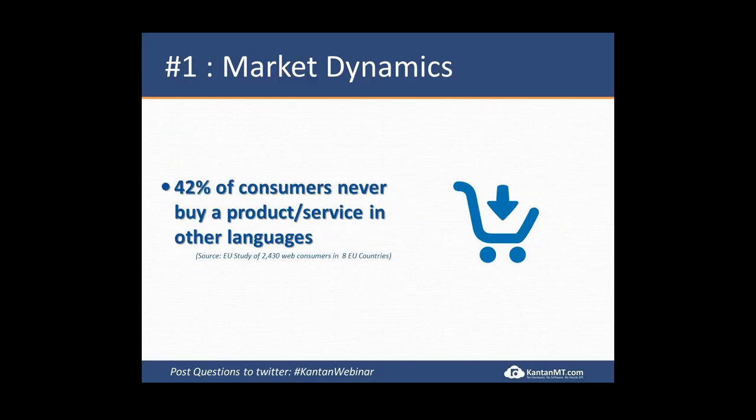Another finding from this survey was that 9 out of 10 internet users will visit a website in their own language if given a choice — the propensity to read about products and services is much higher if the website is in their language. That's a market dynamic driving the need for faster, higher volume translation, where machine translation plays its part. And 42% of consumers never buy a product unless it's in their language, so if you want an international strategy, you immediately cut your potential market by half if content isn't available in the target language.